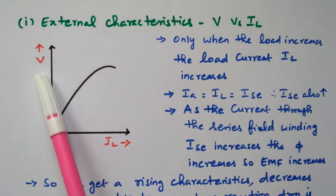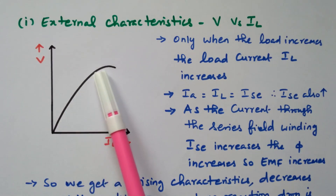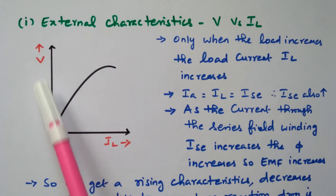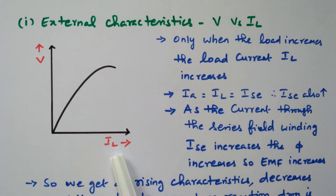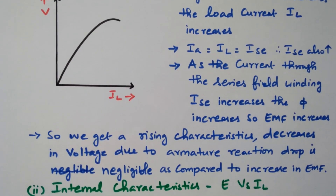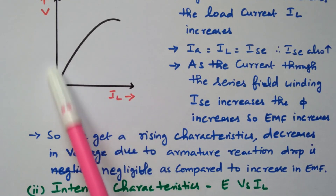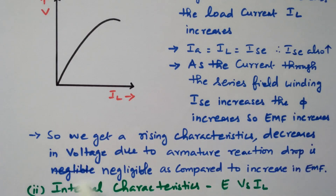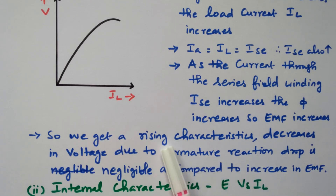When the load current increases, V also increases; after saturation it slowly decreases. The relationship is almost linear — when the load increases, the voltage also increases, giving rising characteristics. The decrease in voltage due to armature reaction drop is negligible compared to the increase in EMF, so it is a rising characteristic.